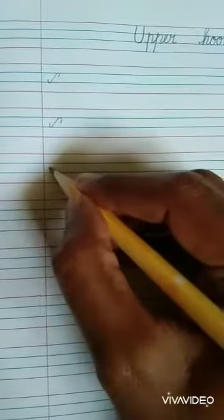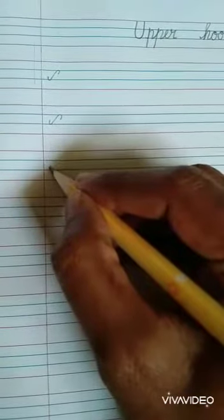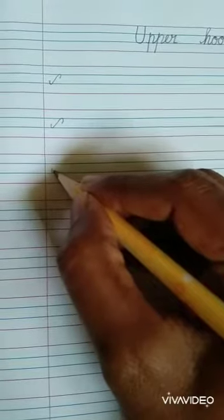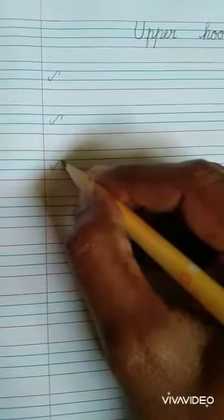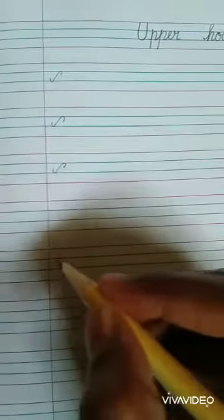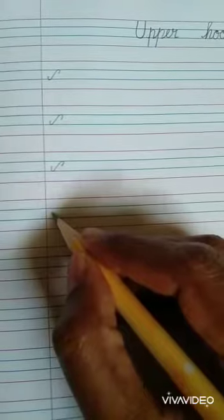Start from middle of the blue line, come down, touch the second line and one down curve. You should not write like a straight line. It should be curve.